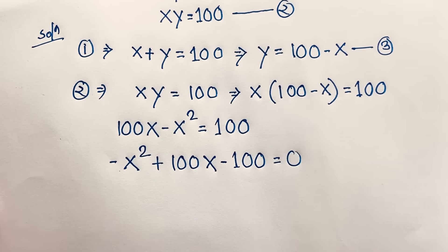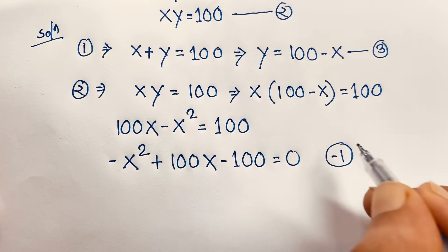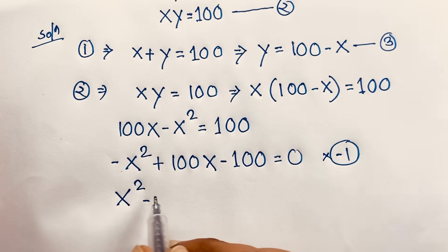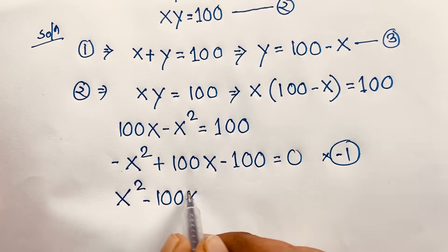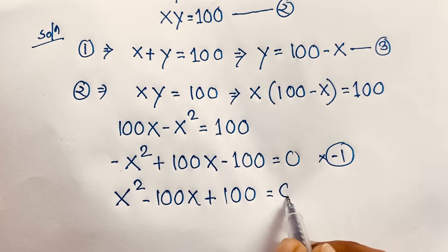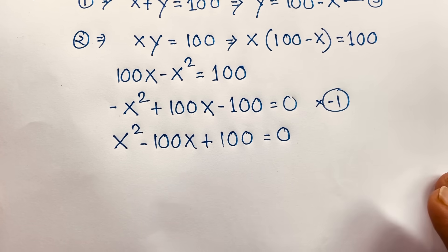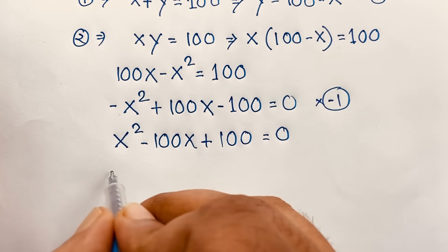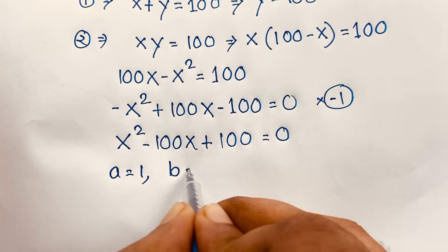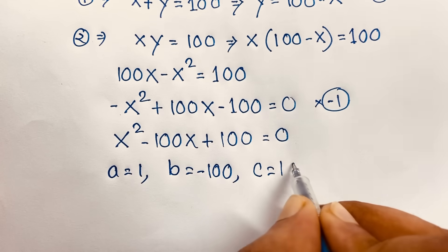Then, if I multiply both sides by negative 1, it will be positive x squared, and this is negative 100x, and this is positive 100, equal to 0. Now this is a nice quadratic equation. Here a is equal to 1, b is equal to minus 100, and c is equal to positive 100.